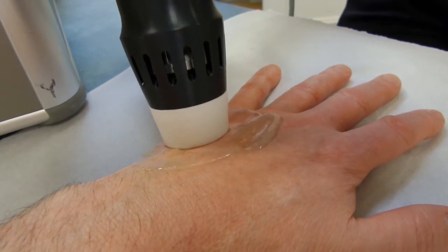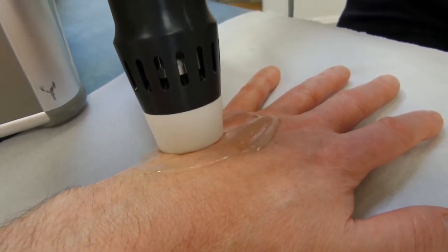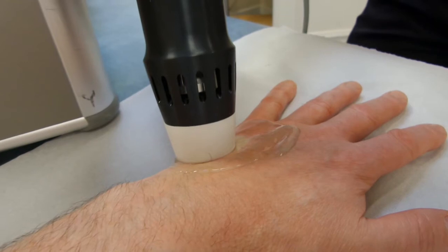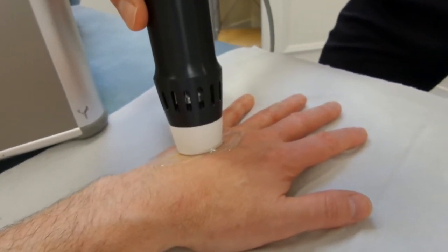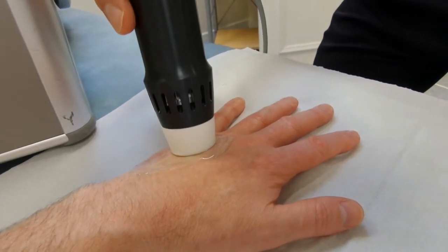Obviously if you were doing an Achilles tendon or a bony heel spur, you would probably just pick an area and focus on that area. Although that does tend to be quite painful and in fact can be damaging to the skin.